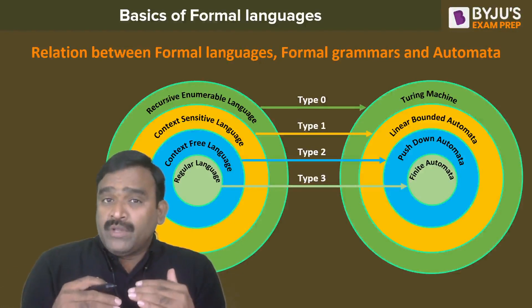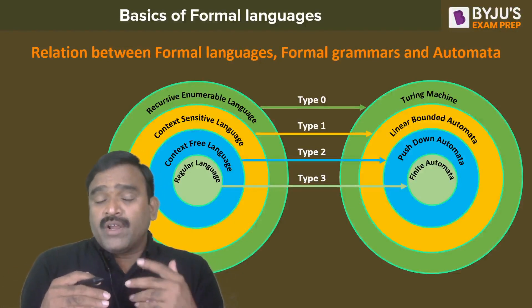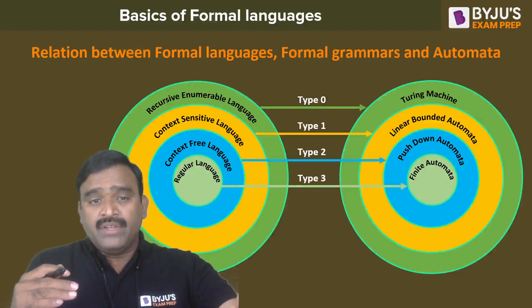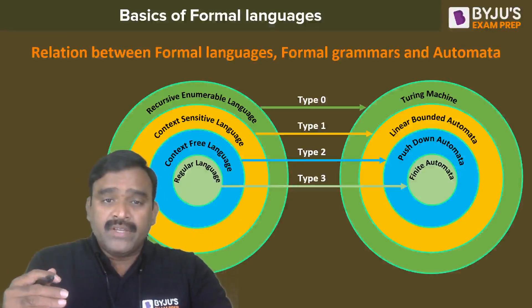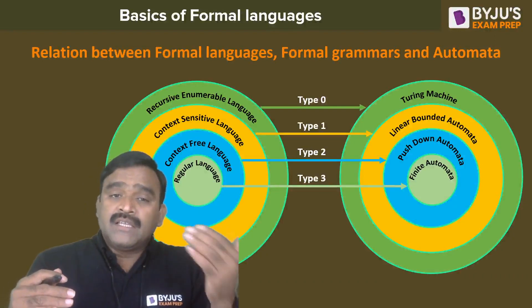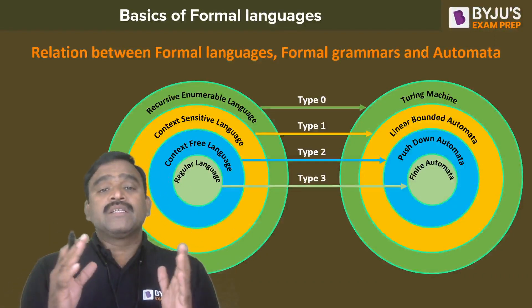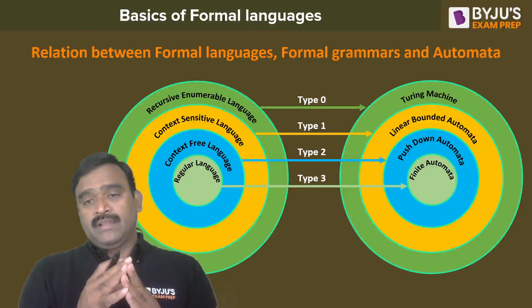A Turing machine can be constructed for any type of language: regular languages, context-free languages, context-sensitive languages, and recursively enumerable languages.